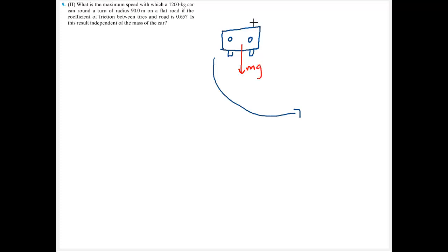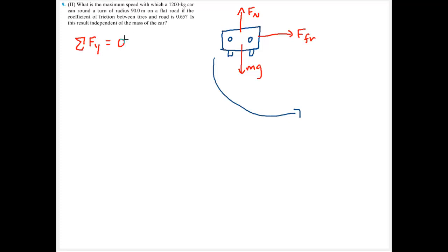Let me draw my free body diagram for this car. I'm going to have mass times gravity in the downward direction, the normal force in the upward direction, and the force of friction, which is essentially what's causing the car to turn. The sum of forces in the y direction: the car is not accelerating in that direction, so normal force equals mass times gravity.